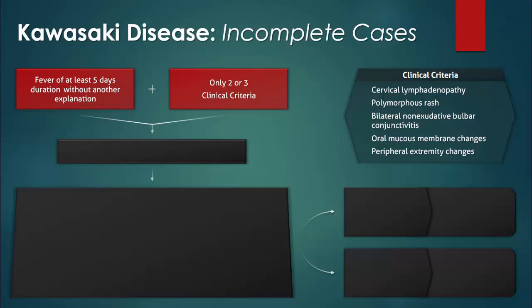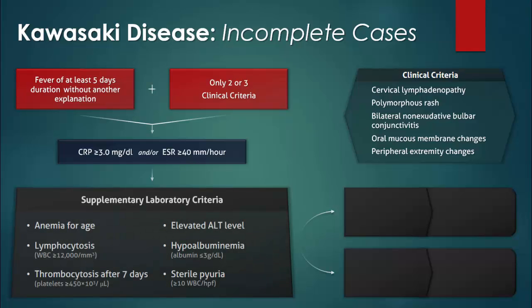However, when only 2 or 3 of the clinical criteria are met, then a case of incomplete Kawasaki disease should be considered. The first step in this situation would be to evaluate the C-reactive protein level and the erythrocyte sedimentation rate. Elevation of either supports the diagnosis and should be followed with an assessment of the supplementary laboratory criteria.